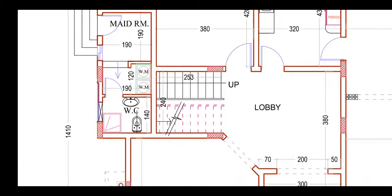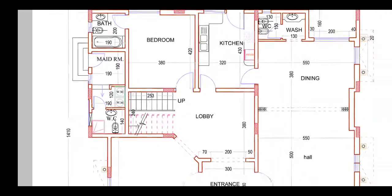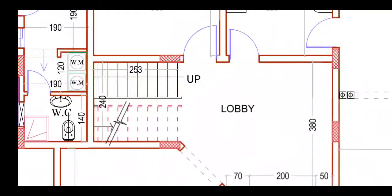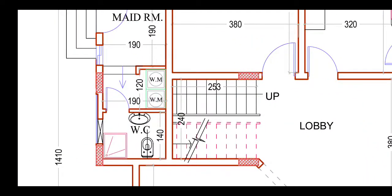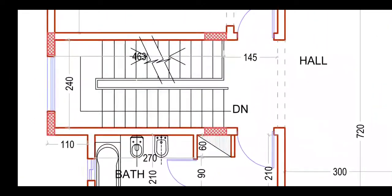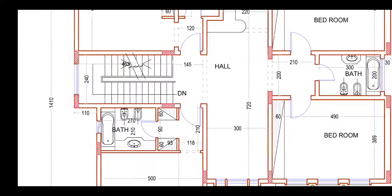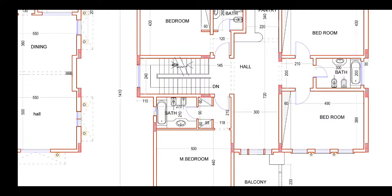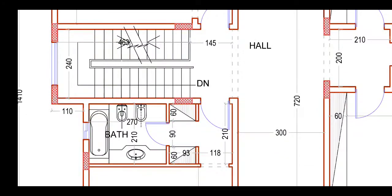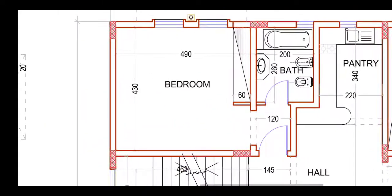So this is our ground floor plan. We reach the first floor via this staircase — that part will be utilized for the stairs. On the first floor, we have a big hall, 720 by 300 centimeters, and a big bedroom, 490 by 430 centimeters.